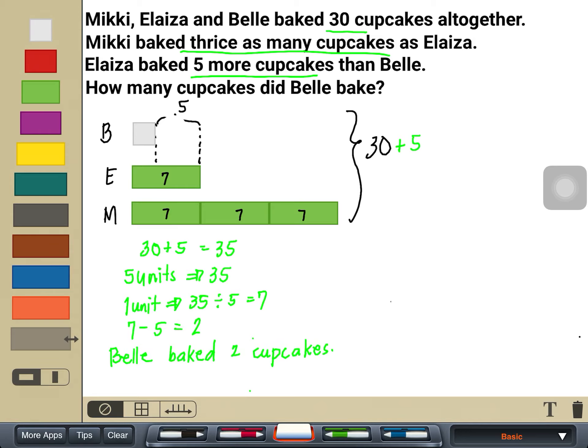How am I going to know if our answer is correct? Let's check if our answer satisfies the given conditions in the problem. We said that Belle baked 2 cupcakes. Eliza says here 5 more cupcakes than Belle, so 2 plus 5, that's 7. And then Mickey is 3 times as much as Eliza, so that would be 3 groups of 7, that's 21.